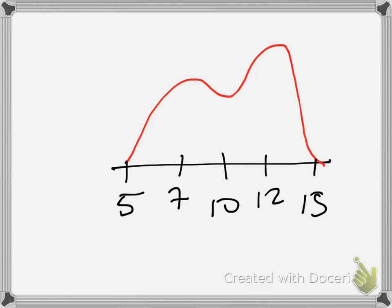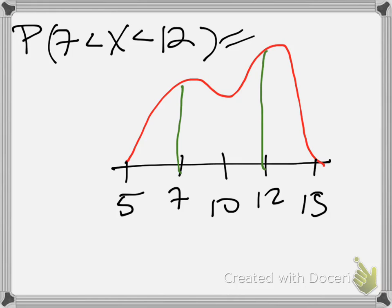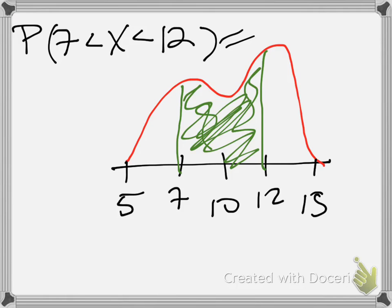Let's consider the situation where we want to calculate the probability that X is between 7 and 12. Again, the idea is still the same - we're still looking for the area under the curve between those points. Here's 7, here's 12, we just want to find the area under the curve between those two points. I am making this up, but let's say that is probably close to half of our area, so let's call it 52%.